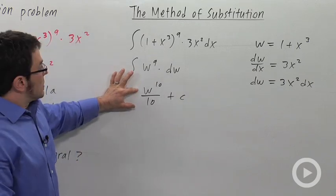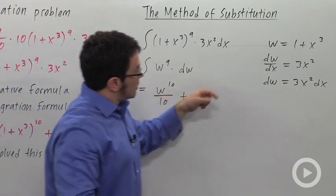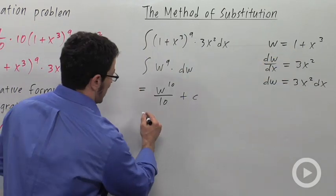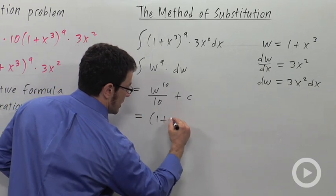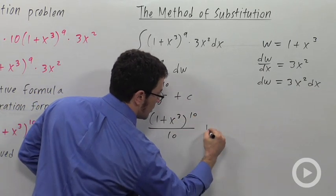Now because I want my answer to be in terms of x, I need to convert back again. And remembering that w is 1 plus x cubed, I just plug that back in: 1 plus x cubed all to the 10th over 10 plus c.